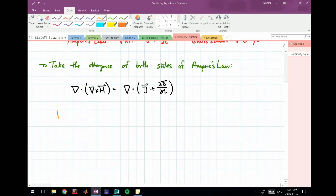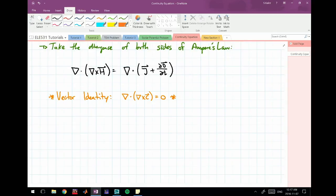I should note here that there is a vector identity which states that if I take the divergence of the curl of any vector field C, it equals zero, which is convenient. So we can set this left side equal to zero.